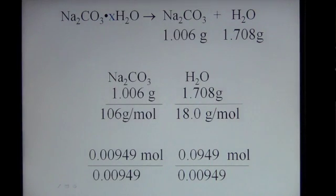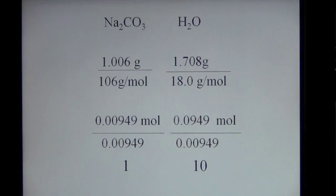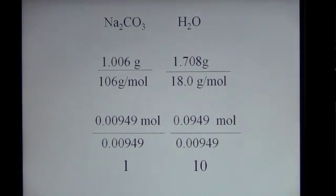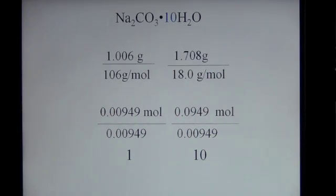Upon doing so, we're going to see how many moles of water we need for every one mole of sodium carbonate, because anything divided by itself is one. We get a ratio of one mole of sodium carbonate to 10 moles of water, because dividing the moles of water by the moles of sodium carbonate gives you 10. So the formula for sodium carbonate with water attached is Na₂CO₃·10H₂O — sodium carbonate decahydrate.